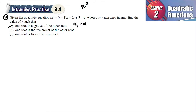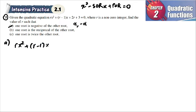We know that x squared minus sum-of-roots times x plus product-of-roots equals zero. For the given equation rx² + (r−1)x + (2r+3) = 0, we divide everything by r so the coefficient of x² becomes 1.